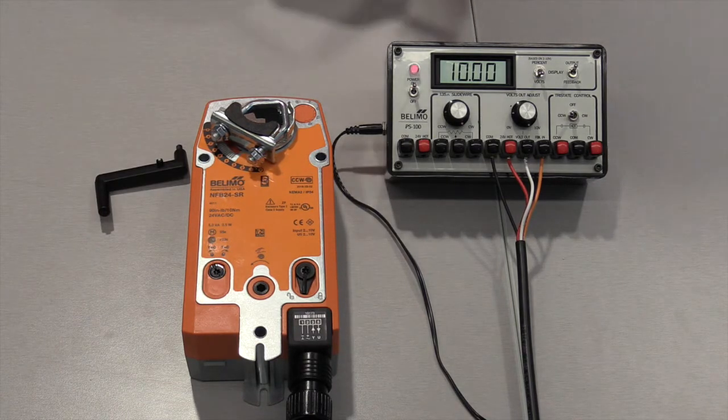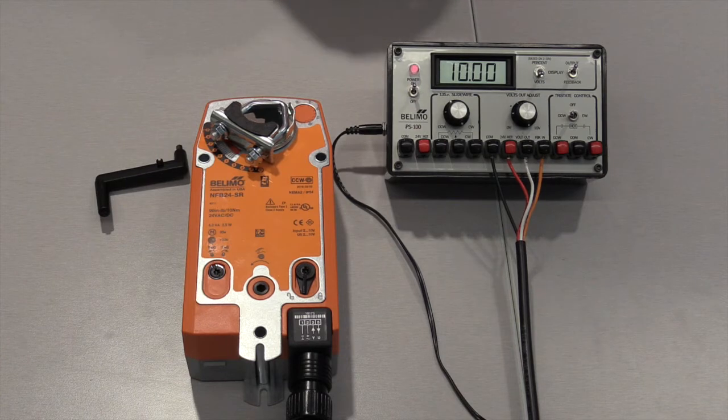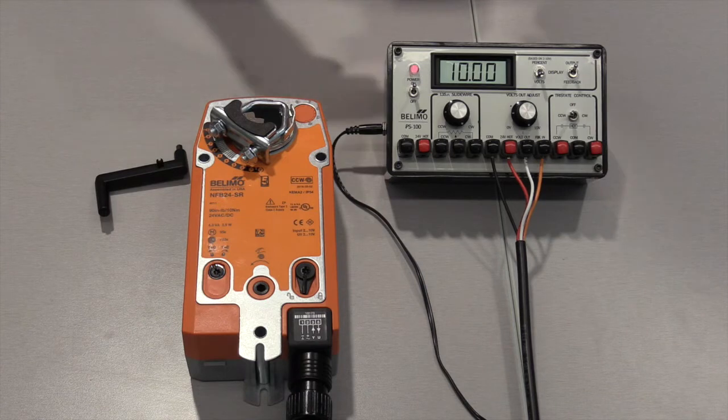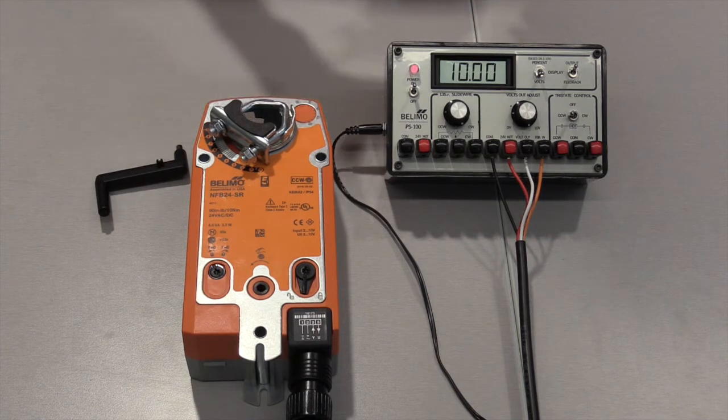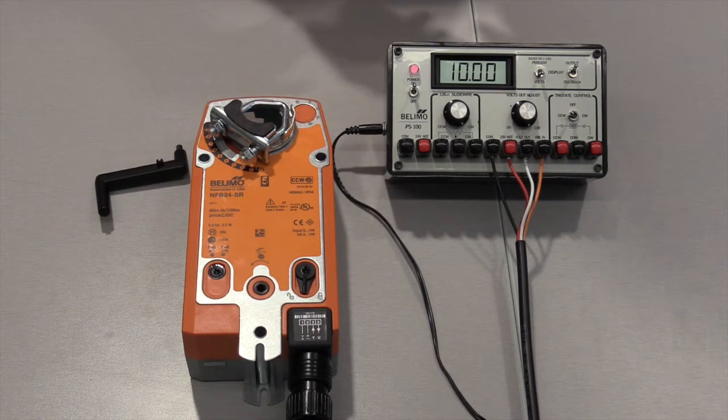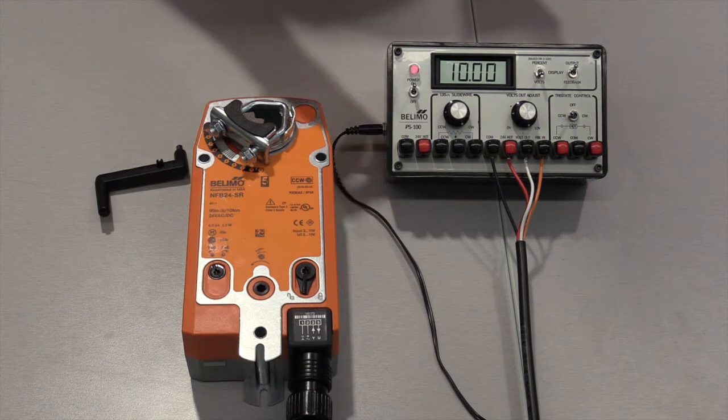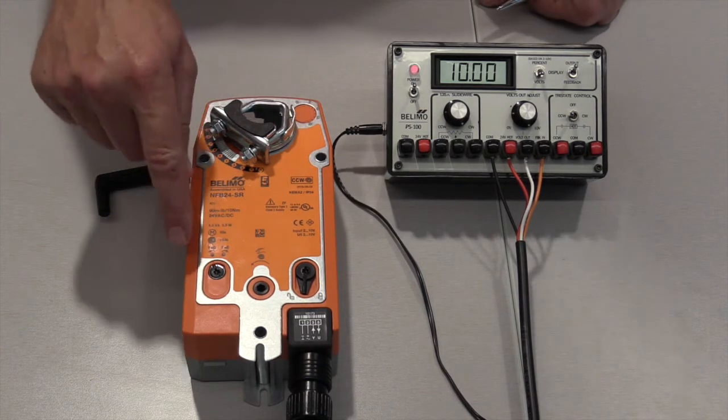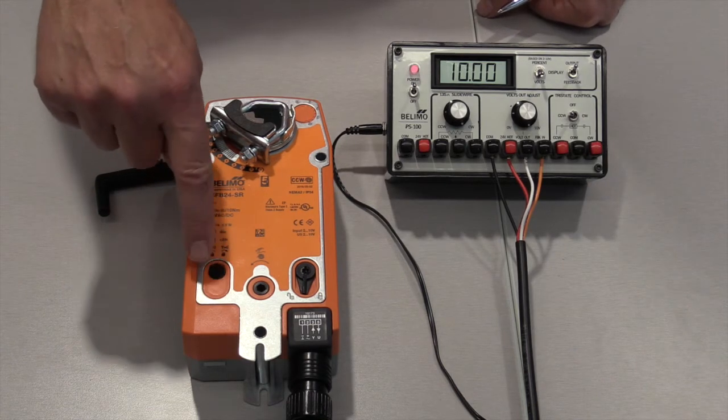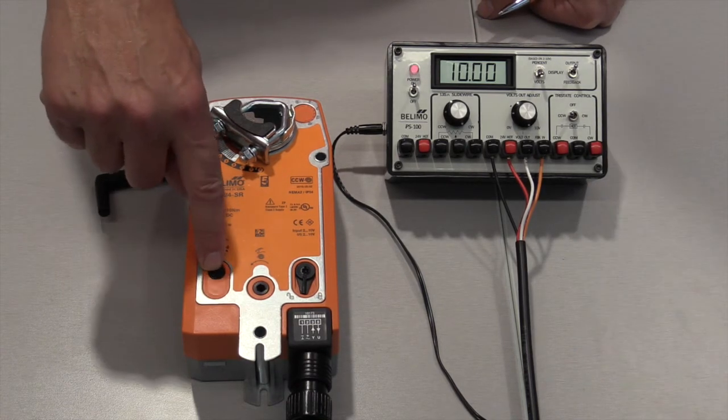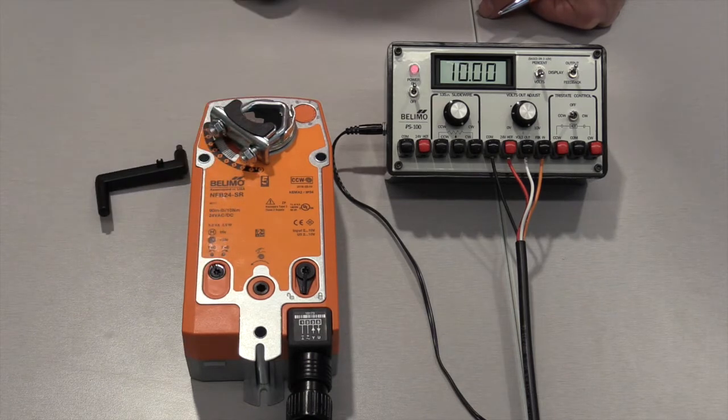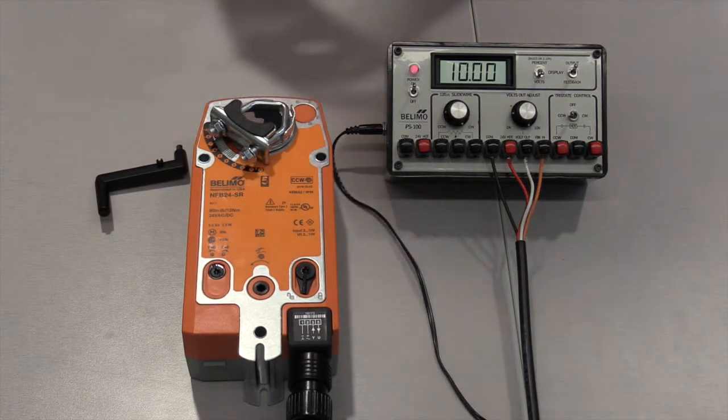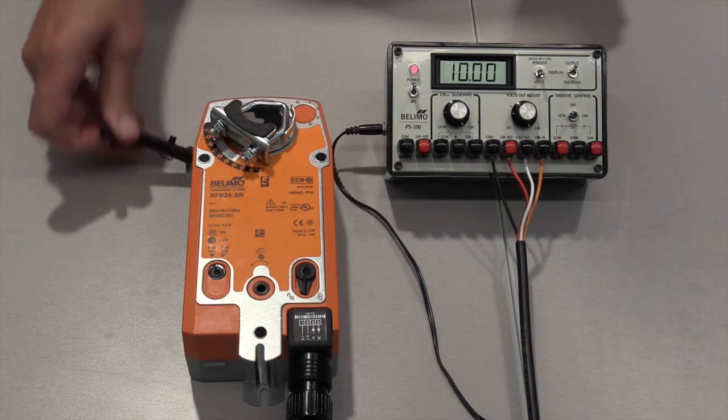It has happened in Belimo tech support, we'll get a phone call from a customer and they'll say that my actuator is behaving in the opposite direction. It's turning in the opposite direction than what I want, and what they're saying is on a 10 volt signal the actuator closes, on a two volt signal it opens. We'll direct them to this switch on the face of the actuator and they just need to change the rotation of this switch and it'll fix the problem. Now there are some building management systems that call for a reverse acting actuator and that's fine if that's what you need.